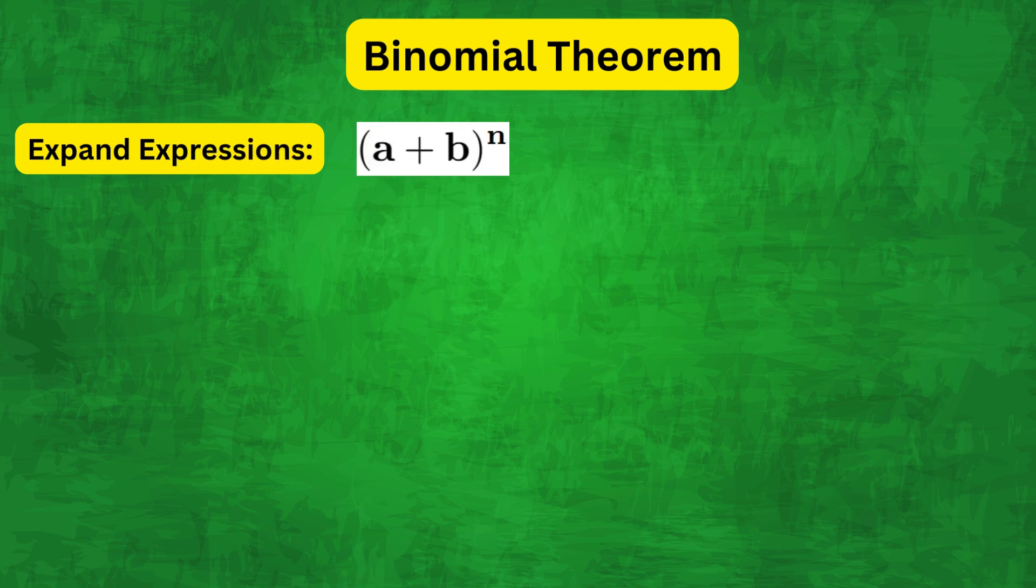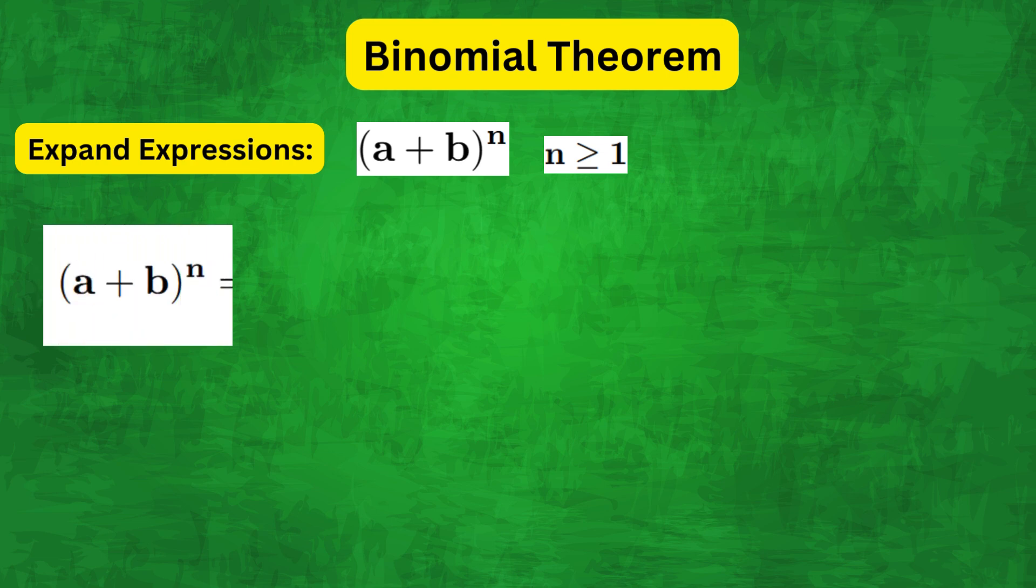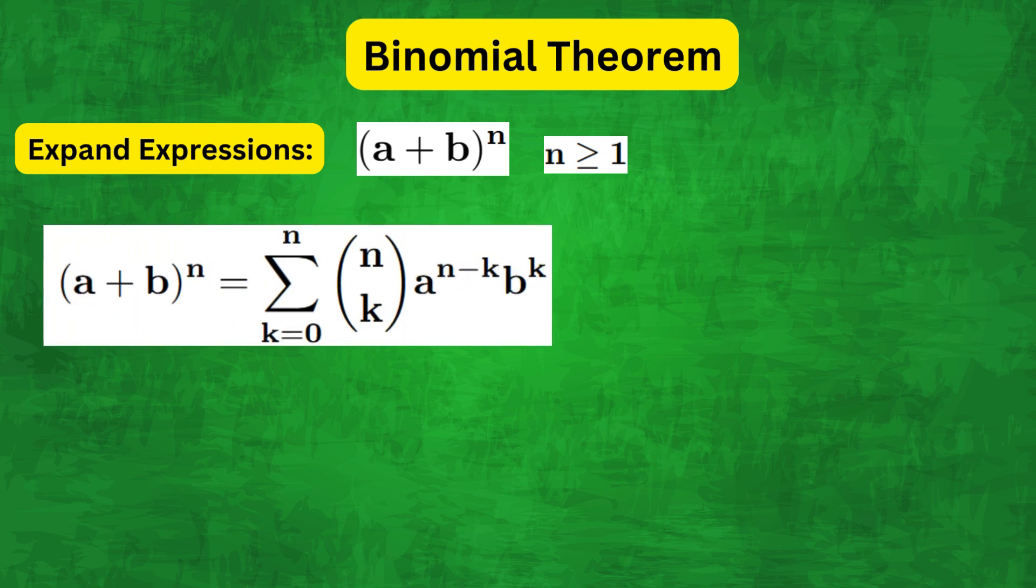Now the binomial theorem allows us to expand algebraic expressions of the form a plus b to the power of n for any positive integer as follows: a plus b to the power of n equals the sum from k equals 0 to n of n combination k, a to the power of n minus k times b to the power of k.